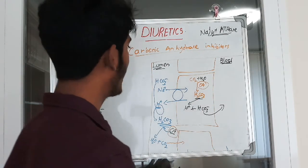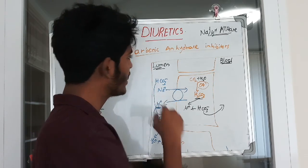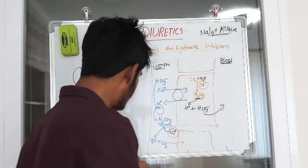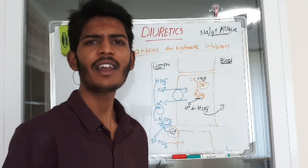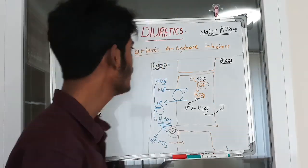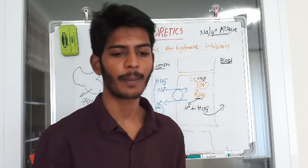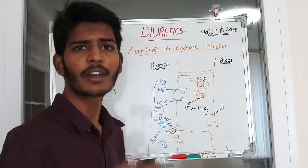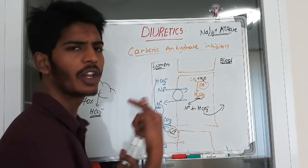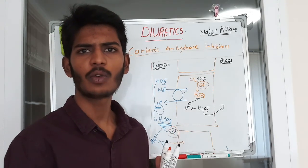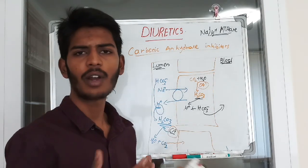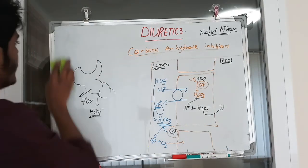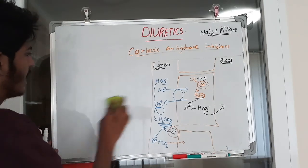If we inhibit carbonic anhydrase — both in the lumen and inside the cell — there is no hydrogen ion exchange, so sodium is not reabsorbed. Increased sodium concentration in the lumen causes diuresis. However, carbonic anhydrase inhibitors are a very mild diuretic, so we don't really use them for their diuretic properties. Long-term use causes continuous loss of bicarbonate, which leads to metabolic acidosis — the major side effect.